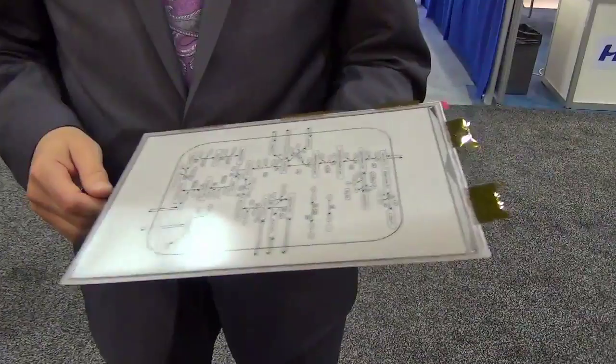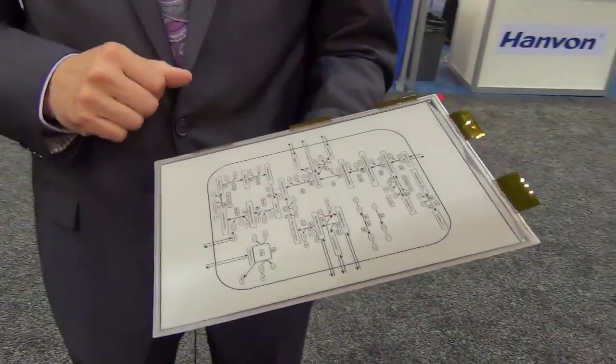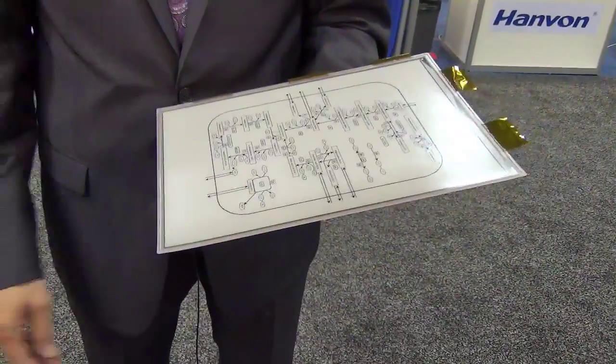With an e-Ink Mobius display, this is roughly the size of an A4 sheet of paper and it weighs only 63 grams.